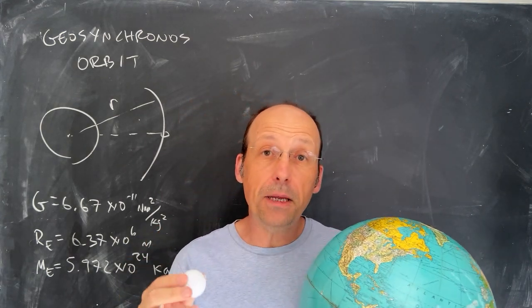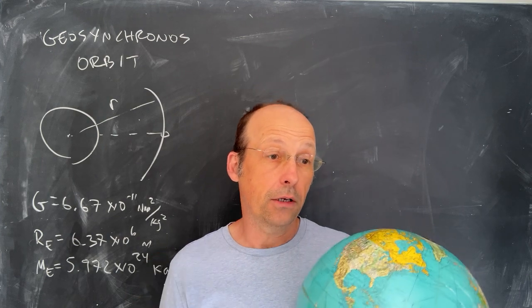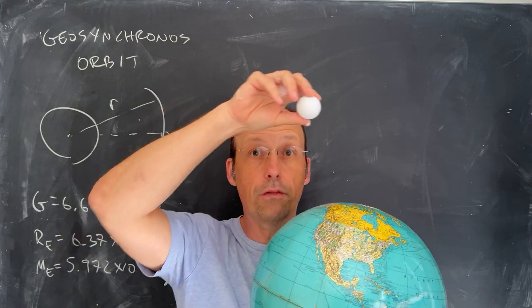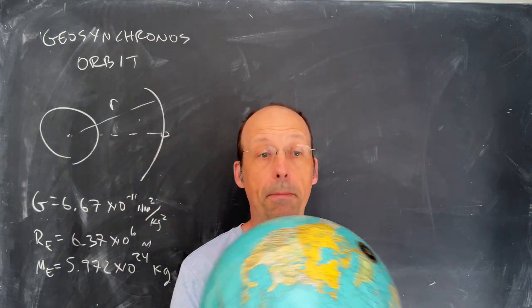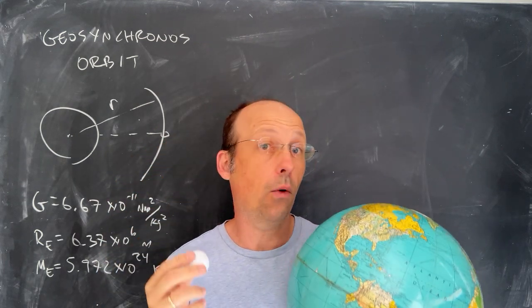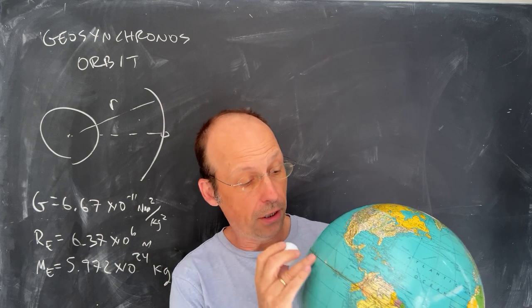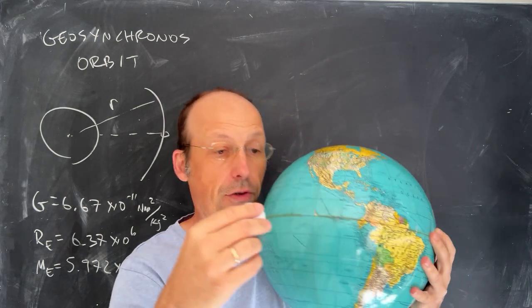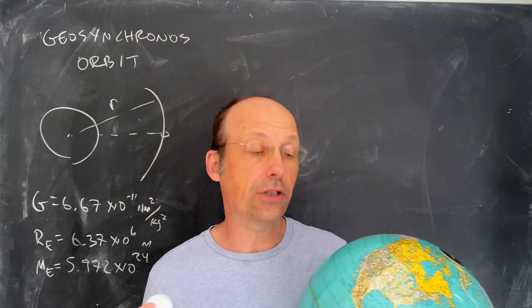Now, geosynchronous means that the orbital periods are the same. So it's possible that you could have the Earth rotating and this going over the pole, right? And then it would come back to the same location in one orbit one day. But if you put it over the equator, then you have the same axis of rotation for the two, and that's a geostationary orbit.